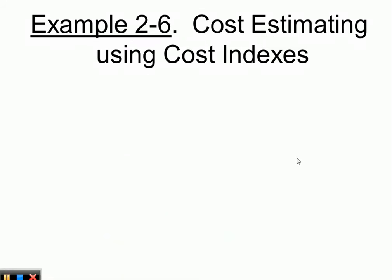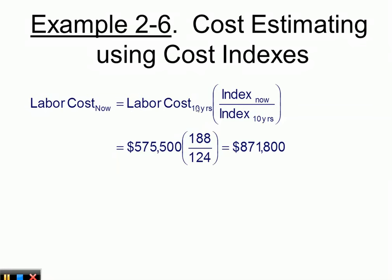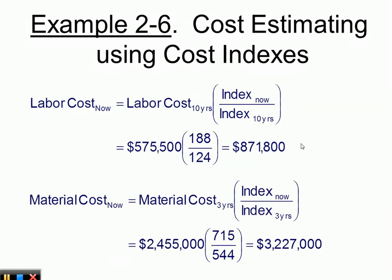Here are two examples using cost indices. For labor costs: multiply the labor cost from ten years ago by the ratio of the labor cost index now to ten years ago to get the current labor cost. For material costs: multiply the material cost from three years ago by the ratio of the material cost index now to three years ago. Plugging in the index values gives the estimated current costs.